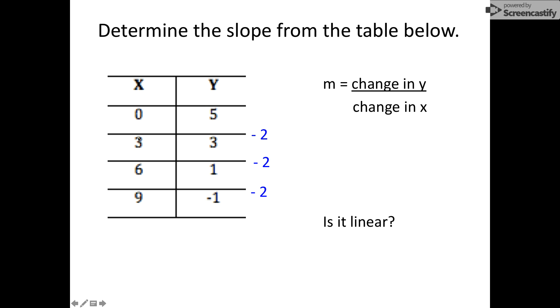And then to go from 0 to 3, we add 3. 3 to 6, we add 3. 6 to 9, we add 3 again. So our slope is negative 2 over positive 3, and since it is a constant rate of change on the x's and the y's, yes, it is linear.